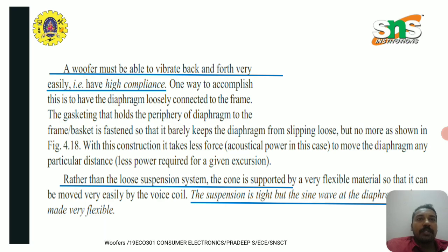A woofer must be able to vibrate back and forth very easily — that is, have high compliance. One way to accomplish this is to have the diaphragm loosely connected to the frame. The gasketing that holds the periphery of the diaphragm to the frame basket is fastened so that it barely keeps the diaphragm from slipping loose, but no more. With this construction, it takes less force to move the diaphragm any particular distance.